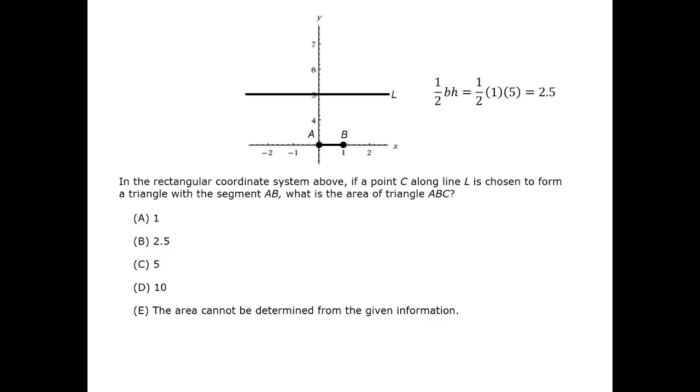Therefore, 1 half base times height is simply 1 half times 1 times 5, or 2.5. The correct answer is B.